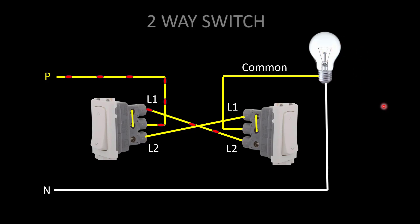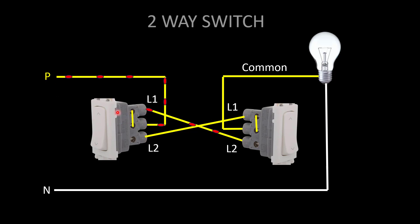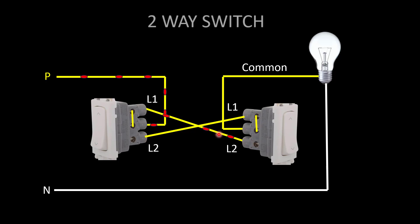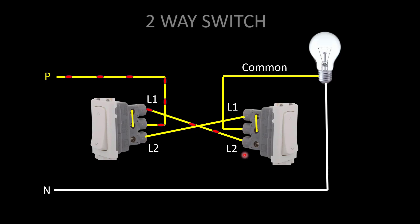The lamp will be off because the phase comes to the common terminal. Switch one is off, so the upper two contacts — through L1 — carry the current to L2 of the second switch. The second switch is also in off position, so common and L1 are in contact, meaning the circuit is broken. There is no current flow to the lamp. If both switches are off, the light will be off.